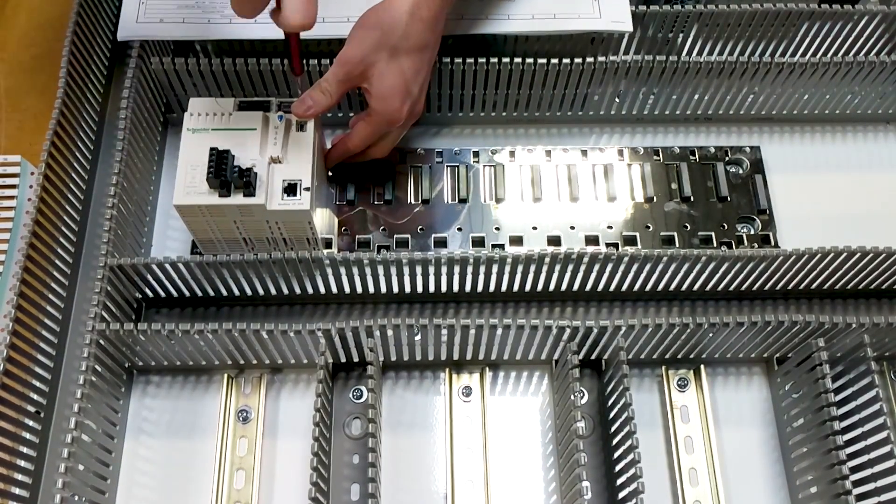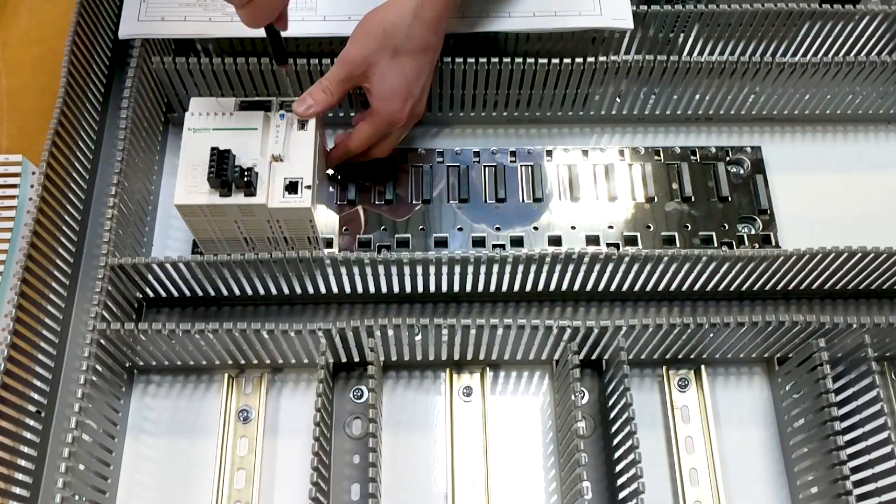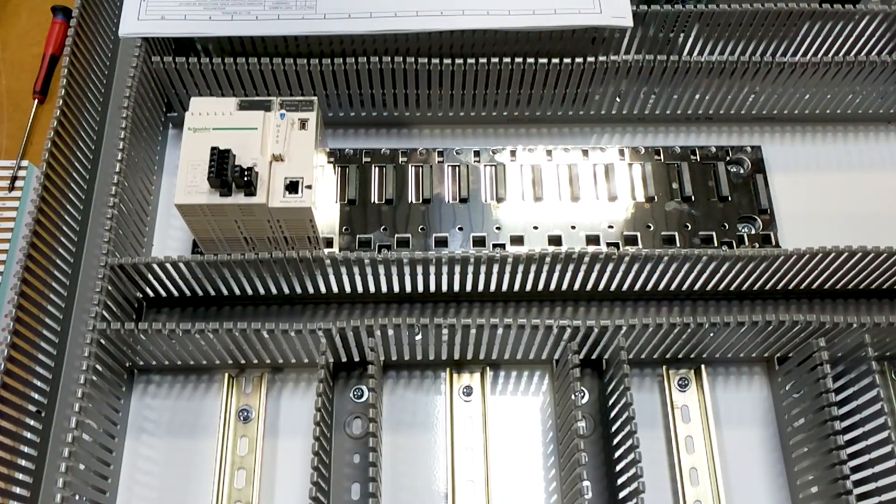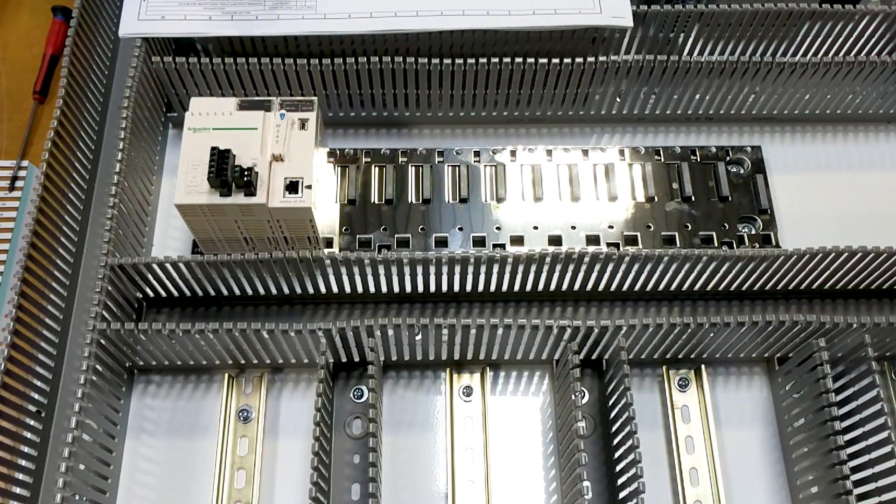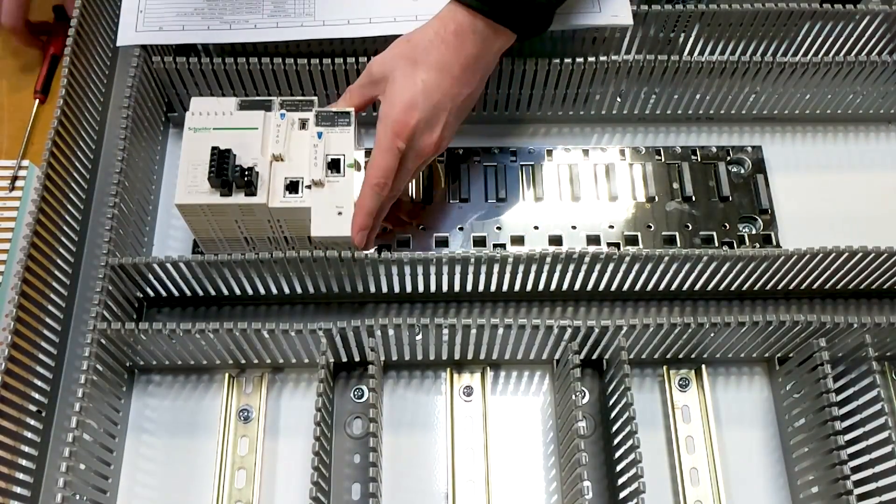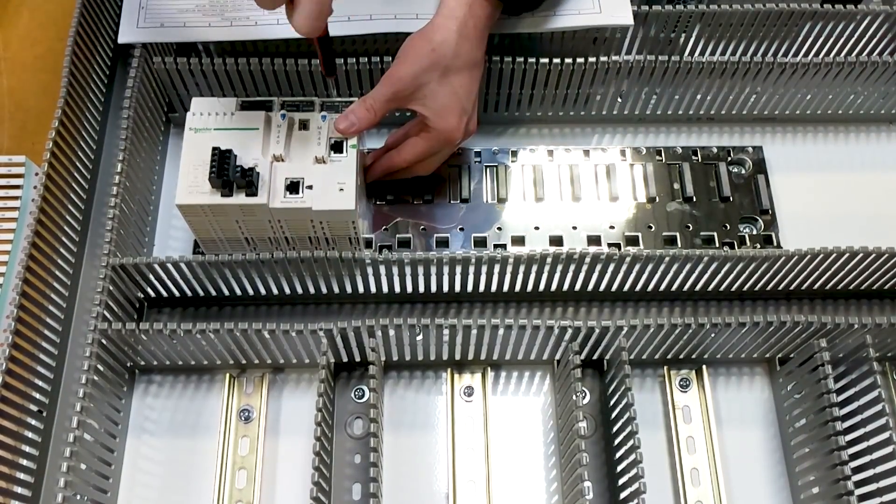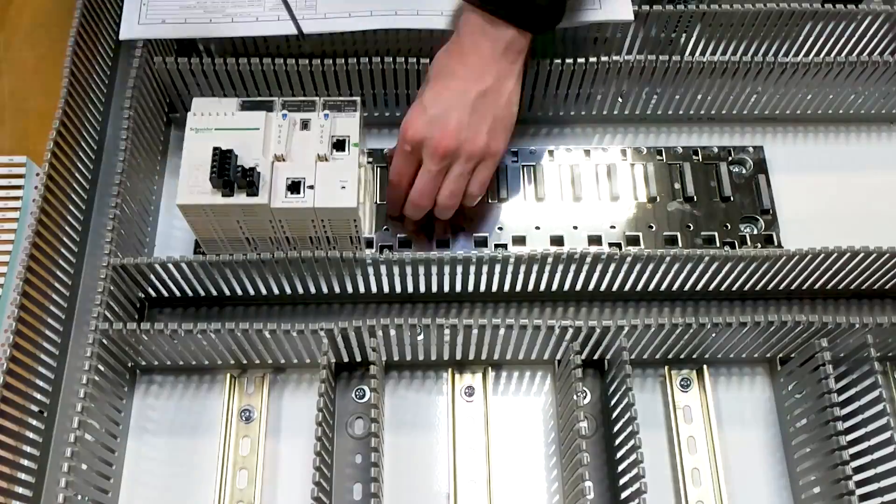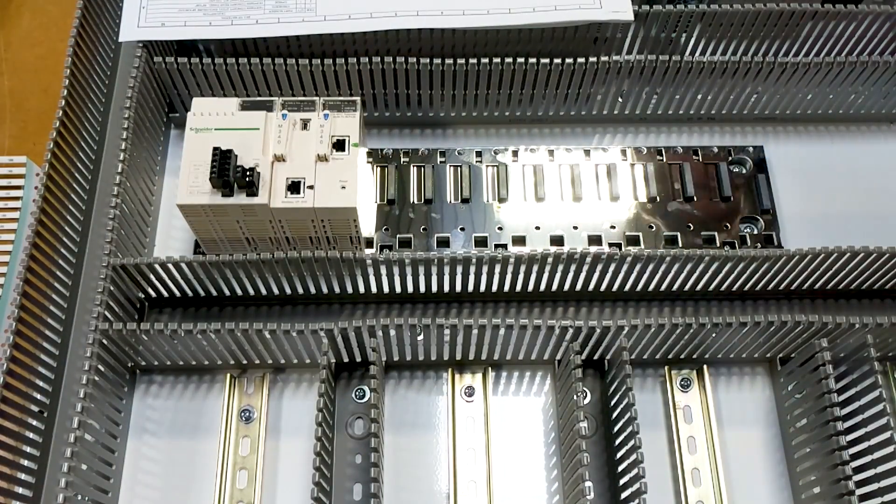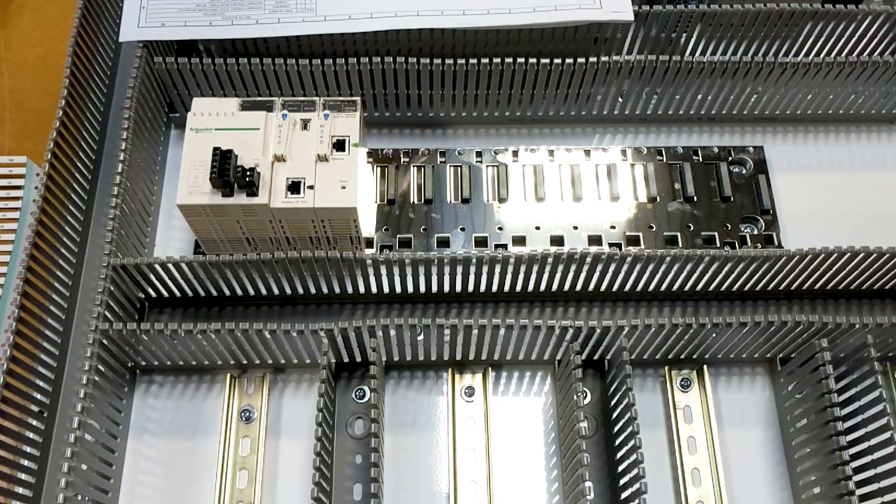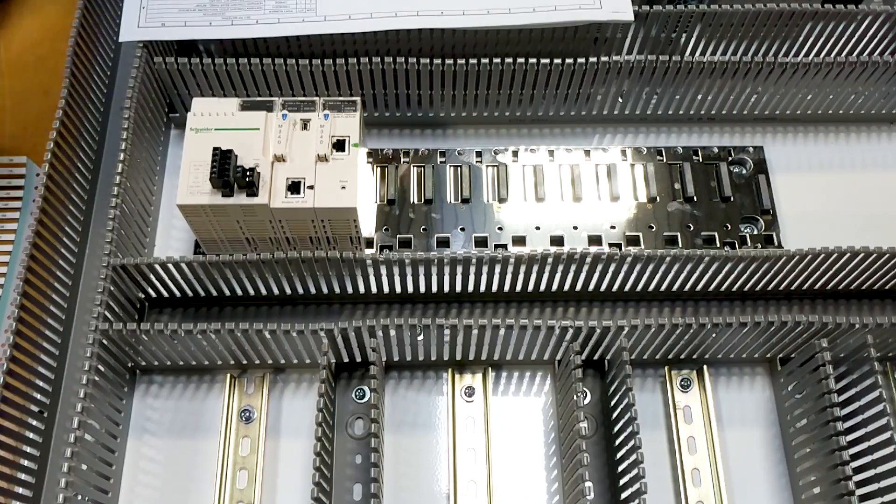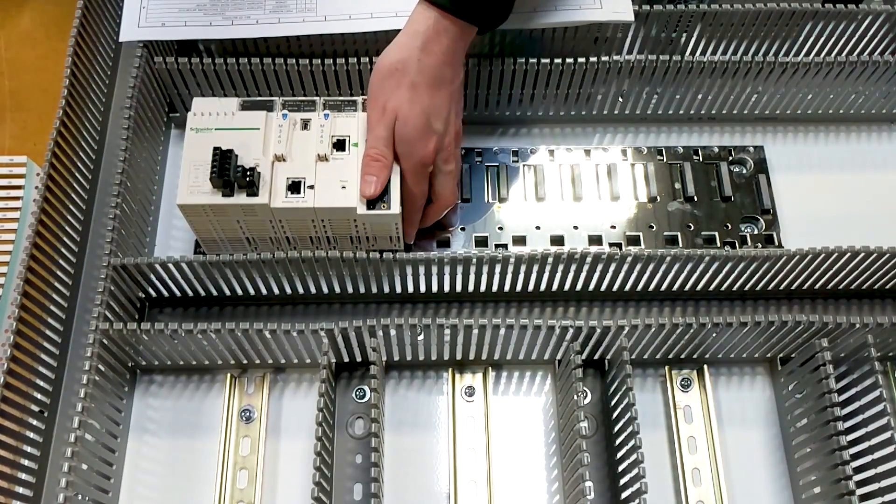And at that point, we're going to use the exact same hardware, the 10-24 machine screw in this case, as well as a lock washer and regular washer to secure the PLC to the back plane. Once the PLC is secured, we have officially secured all of the electrical hardware, DIN rail and wire ducting to our back plane.